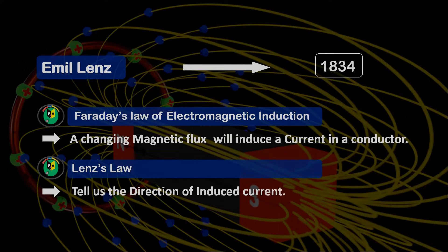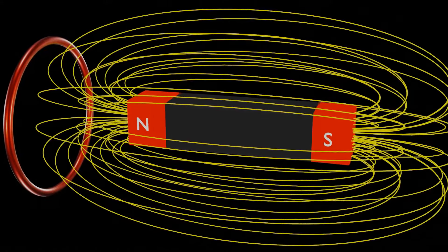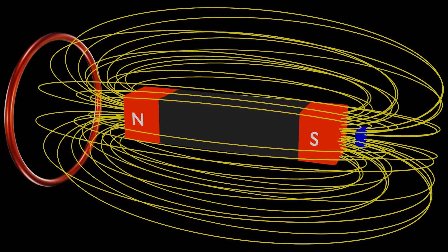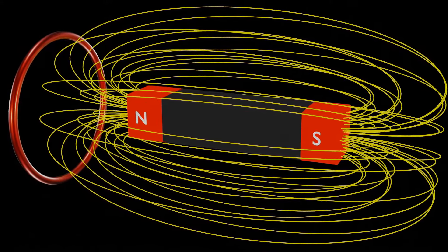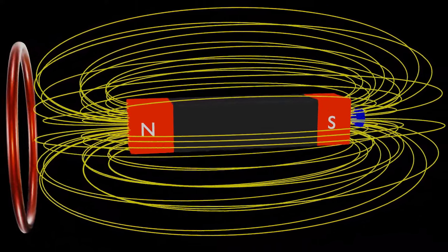Let's try to understand it with the help of an experiment. We have a single coil and a bar magnet, which consists of magnetic field lines emerging from the north pole and coming to the south pole. Initially, there is no magnetic field in the coil.